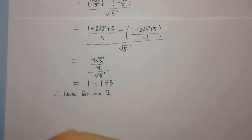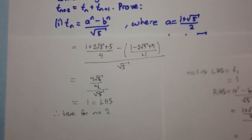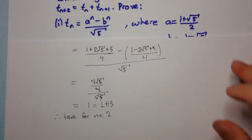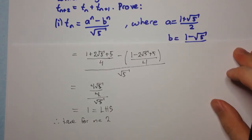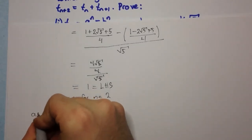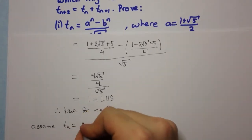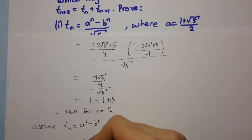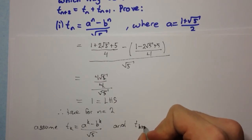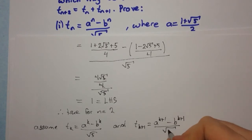Now we need to make our inductive assumption. Remember what we actually want to prove. We need to assume it's true for n equals k, but we also need to assume it's true for n equals k plus 1, just like we had to prove it was true for n equals 1 and n equals 2. So assume: t(k) equals (aᵏ minus bᵏ) over root 5, and t(k+1) equals (a^(k+1) minus b^(k+1)) over root 5.